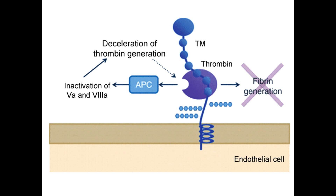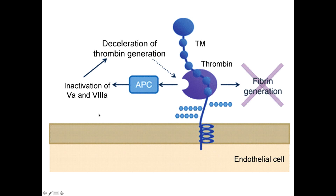The other factors we haven't spoken about yet are factor 5, factor 8, and thrombin. Thrombin is continuously degraded by a surface protein on the endothelium called APC — activated protein C — which requires a cofactor called protein S. Protein S enhances the activity of protein C, whose function is to cleave factors 5 and 8. This is further enhanced by thrombomodulin, which requires thrombin as a cofactor.